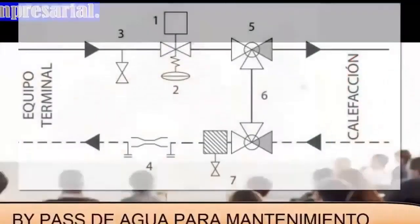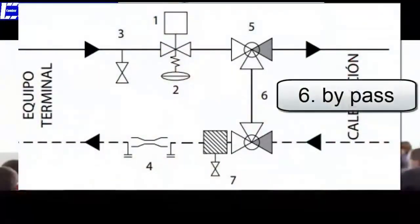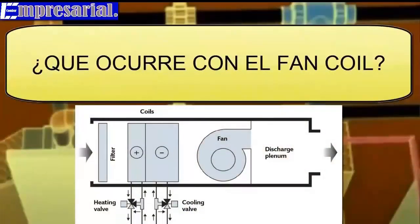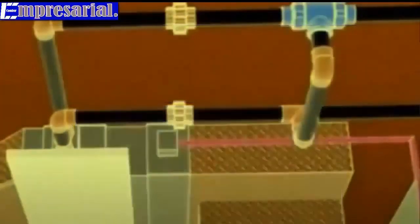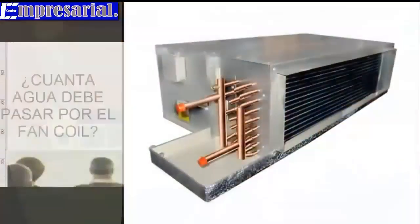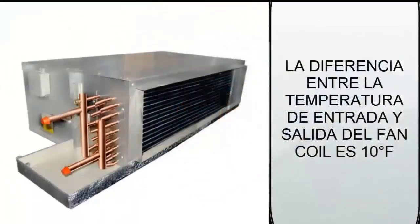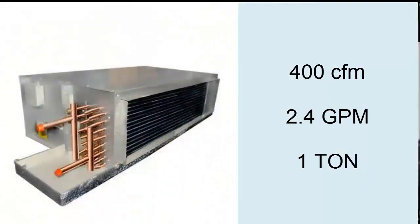Bypass: when the solenoid valve closes, the flow of water which was originally directed towards the exchanger is diverted through this pipe. It is also useful for maintenance. As for the fan coil, we must remember that these units usually work with a variation of water temperature between the outlet and the inlet of 10 degrees Fahrenheit. With these conditions, a fan coil should receive approximately 2.4 gallons per minute for every 400 cubic feet per minute of air that it is conditioning.